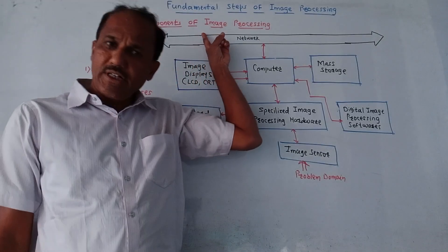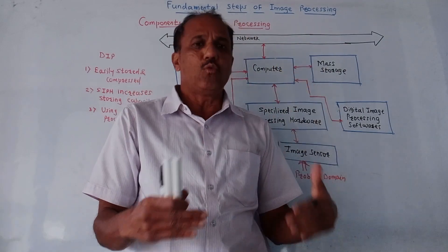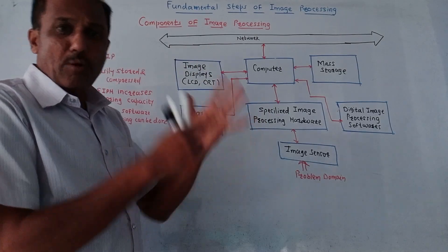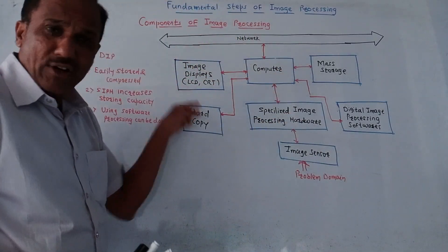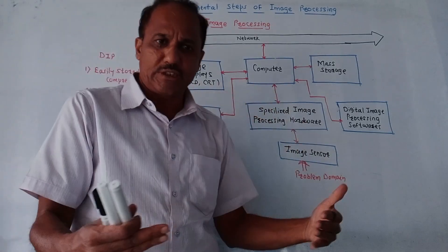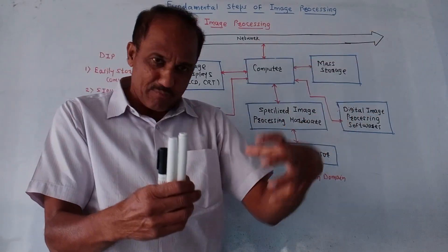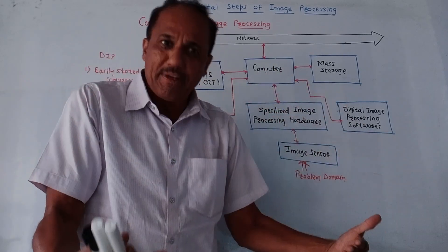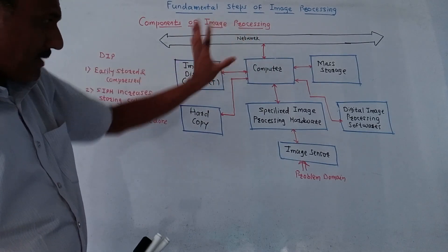The next part is components or elements of image processing. From an exam point of view, we may expect a question like: draw and explain the components of digital image processing. This block diagram represents the elements used in image processing — the idea is to capture an image and process it.